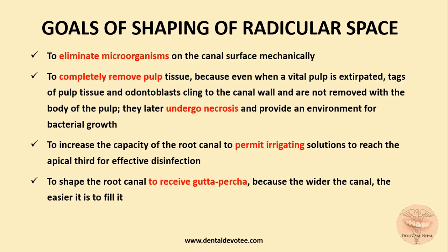Let's revise the goals of shaping of the radicular space. These are: to eliminate microorganisms on the canal surface mechanically; to completely remove pulp tissue, because even when a vital pulp is extirpated, tags of pulp tissue and odontoblasts cling to the canal wall, undergo necrosis, and provide an environment for bacterial growth; to increase the capacity of the root canal to permit irrigating solutions to reach the apical third for effective disinfection; and to shape the root canal to receive gutta-percha, because the wider the canal, the easier it is to fill.